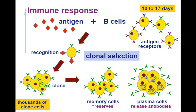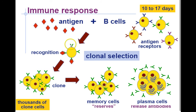In AP Biology chapter 43 part 4, we're going into information about how B cells are involved with the third line of defense, which is specific against one invader. There are millions of types of B cells, each with different receptors for different antigens. Here we have an antigen — say from a virus — floating in the humoral part of your blood, and only one specific B cell will recognize that antigen. All the other B cells cannot bind to it.